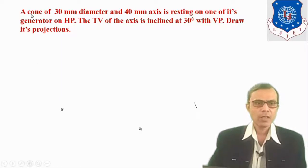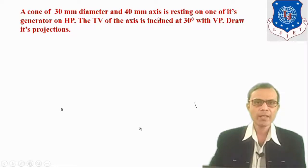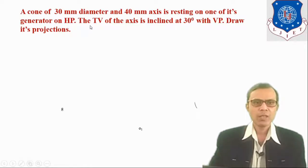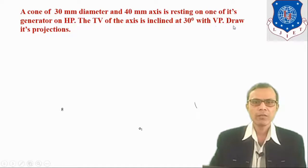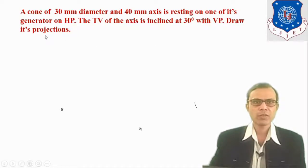The cone of 30 mm diameter and 40 mm axis is resting on one of its generators on HP. The top view of the axis is inclined at 30 degrees with VP. Draw its projections.